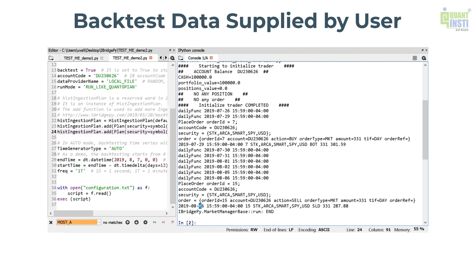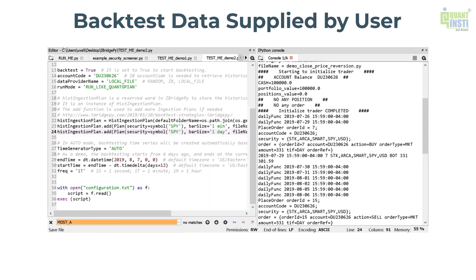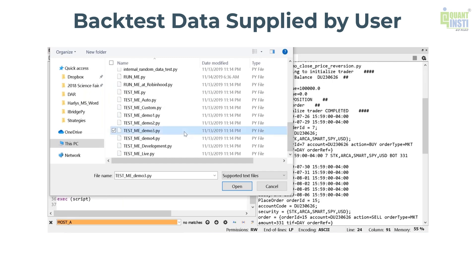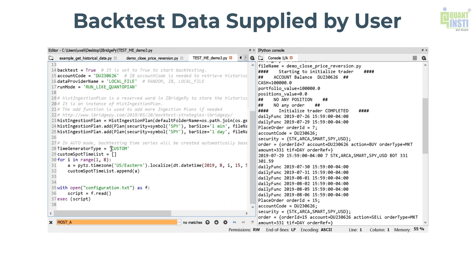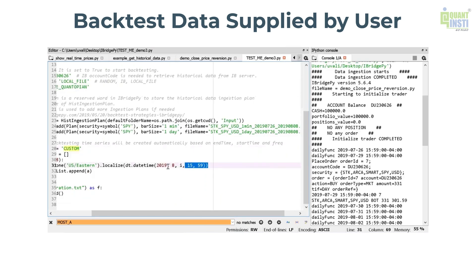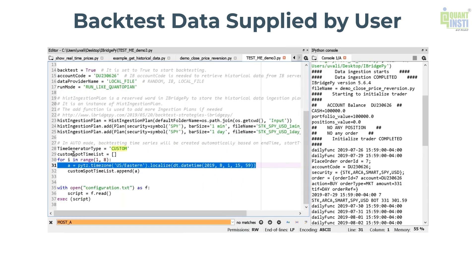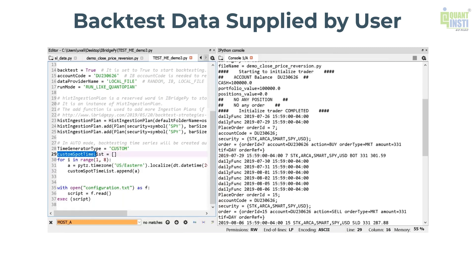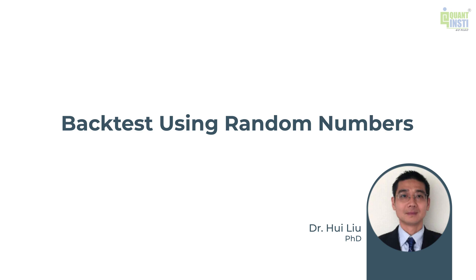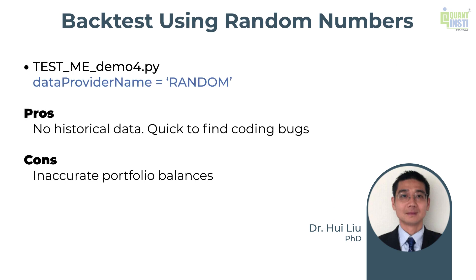To run at only specific times, what you need to do is change the time generator to custom and put the spot times into the custom spot time list, then go through your backtester — your test will run much faster. Also, you can change the data provider name to random so that no real historical data is needed. It's just random data, but you can use it to quickly find out your coding bug.